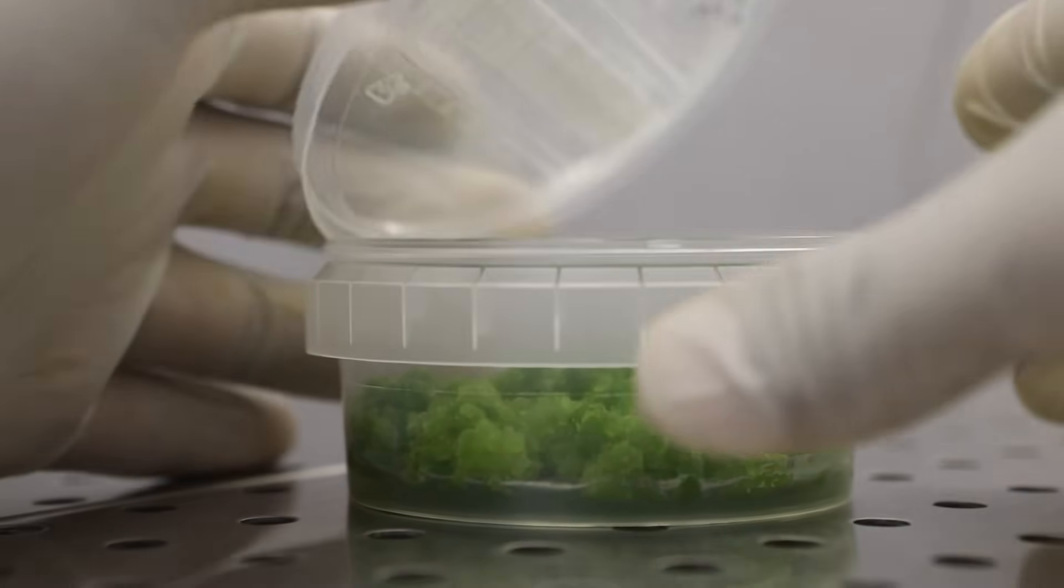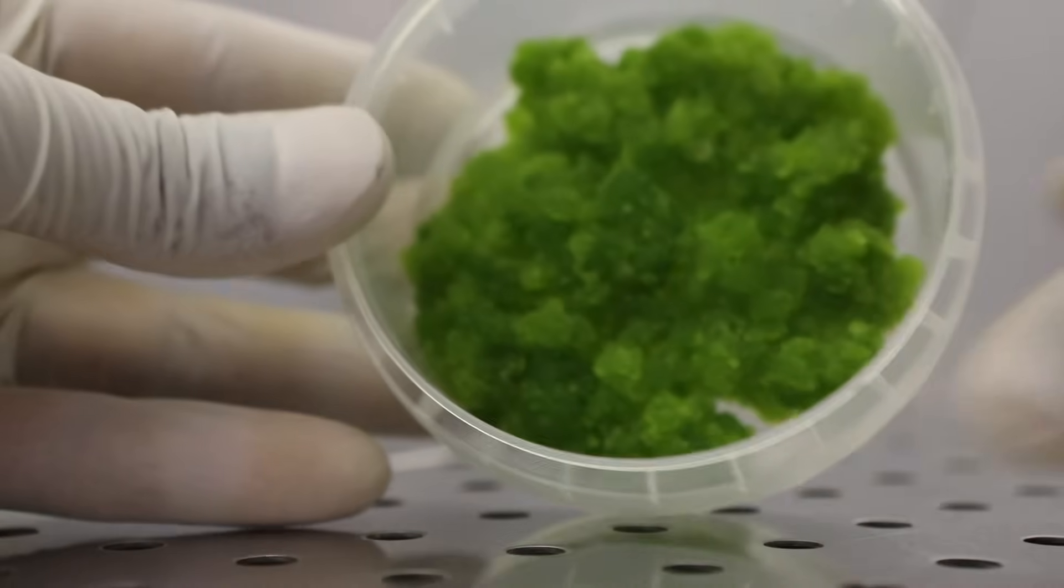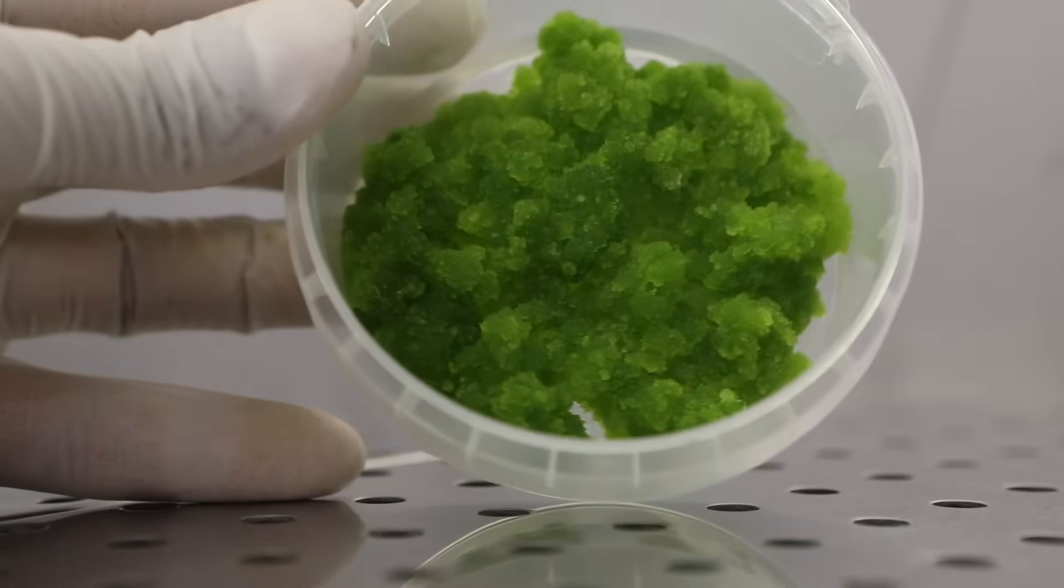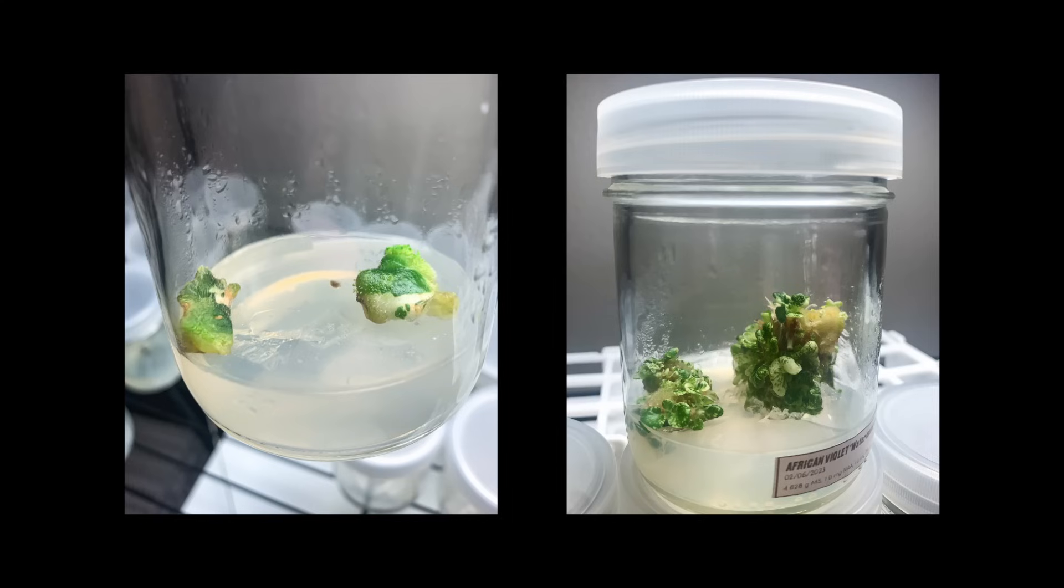When placed on multiplication media, many types of plant leaves will produce callus. From the callus, we will then see baby plants emerge, multiple baby plants per container.